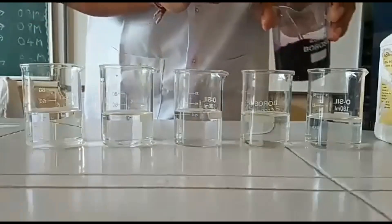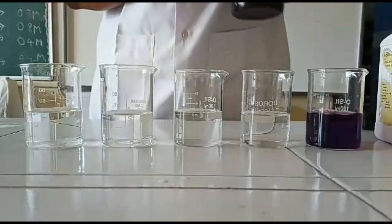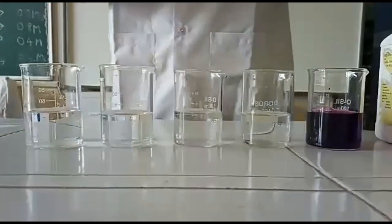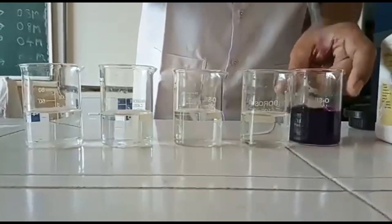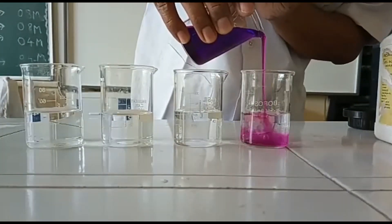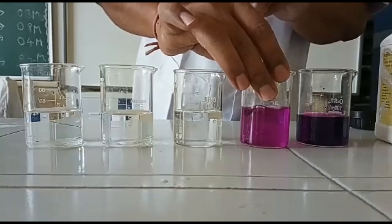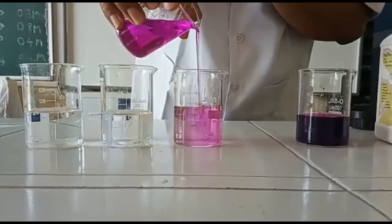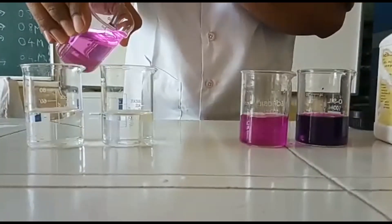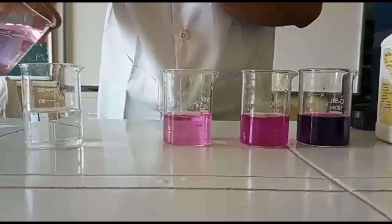Now I am adding 10 ml to the first beaker. Next, I am mixing it carefully and properly, then adding 10 ml of this in the next beaker. Again I am mixing this one, adding 10 ml in the next one, mixing it thoroughly, 10 ml in the next beaker, and the last beaker again 10 ml.